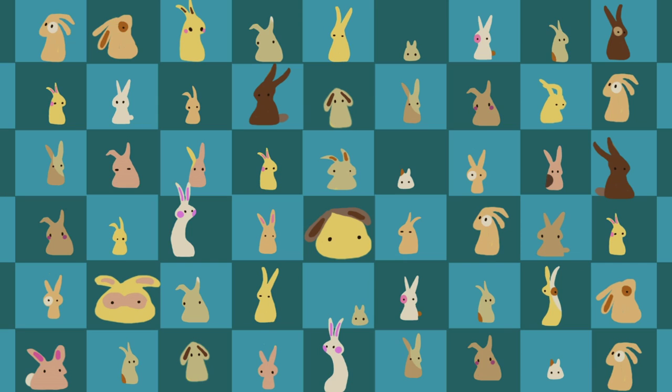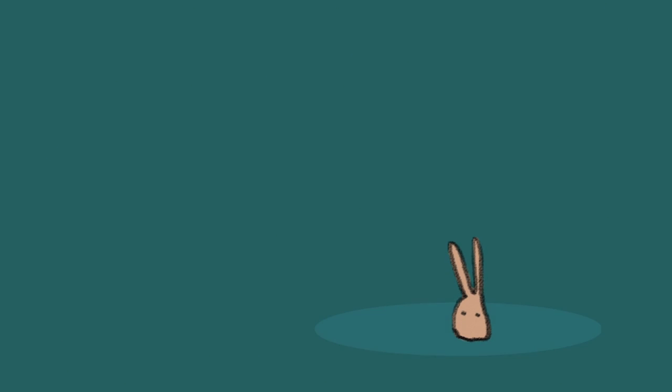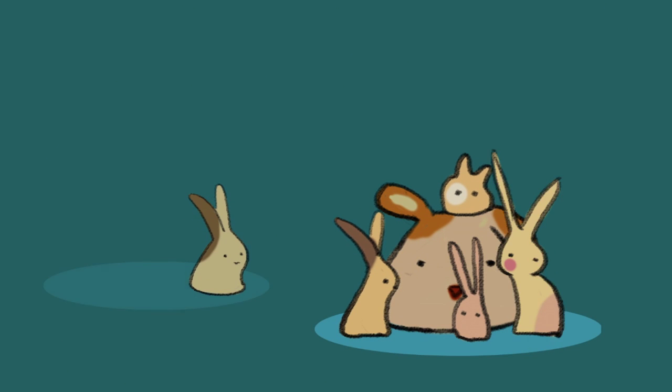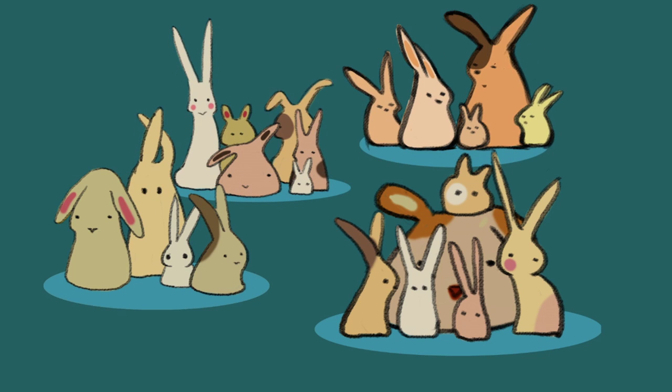Instead of measuring every rabbit in the whole group, he decides to measure rabbits in small groups chosen at random from the whole group. He knows that each small group won't necessarily be perfectly representative of the whole group. So, he measures many small groups and then compares the averages of each.